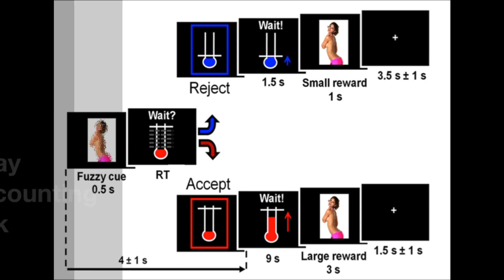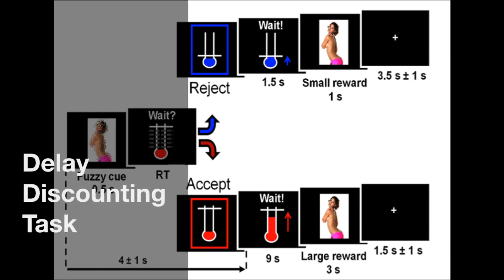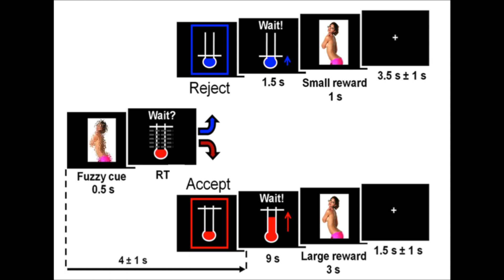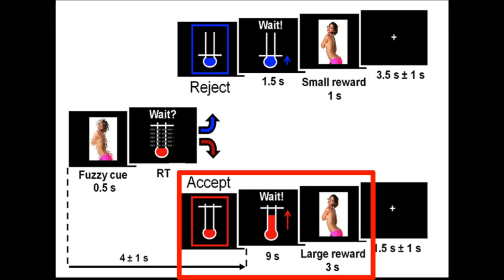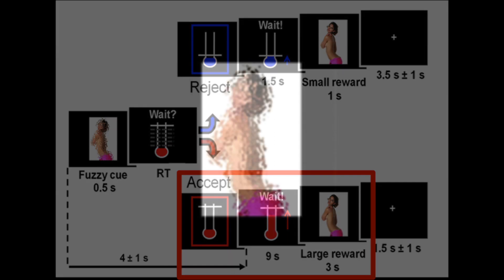Here we wanted to investigate more specifically the valuation system and the decision-making system. We used a delayed discounting task. Patients had to decide between two options: wait for one second and a half to briefly view an erotic image, or rather wait longer to see the erotic image for longer. On each trial, the fuzzy cue was presented briefly.